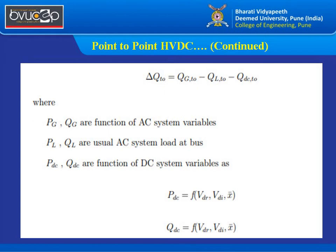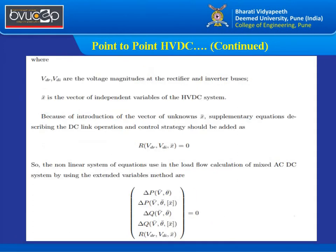Similarly, reactive power is also a function of VDR, VDI, and X̄. X̄ is the independent variable obtained through the DC link strategy. We can define a function R of VDR, VDI, and X̄ equal to zero. For the unified formulation, the extended column matrix combining AC and DC variables is equated to zero: ΔP(V̄, θ̄), ΔP(V̄, θ̄, X̄), ΔQ(V̄, θ̄), ΔQ for DC, and the DC-only parameter R(V̄, X̄) — all equated to zero.